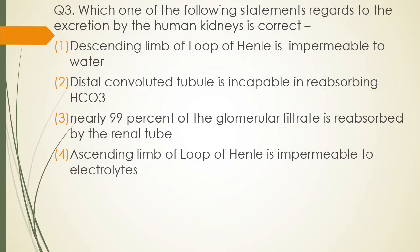Question 3. Which one of the following statements regarding secretion by the human kidney is correct? Option: Descending limb of loop of Henle is impermeable to water. The correct answer is option 3 — nearly 99% of glomerular filtrate is reabsorbed by the renal tubules.